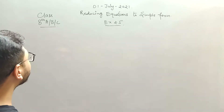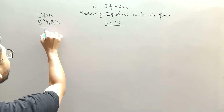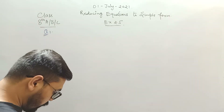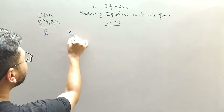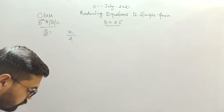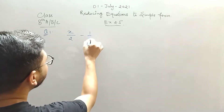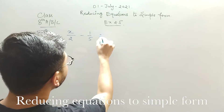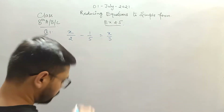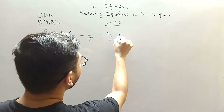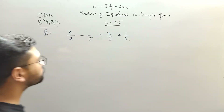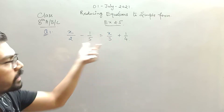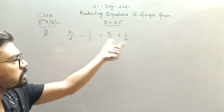Let's take the first question of Exercise 2.5. Question number 1 is: x divided by 2 minus 1 upon 5 equals x upon 3 plus 1 upon 4. First, you need to club the variable terms on one side and the constant terms on the other side.